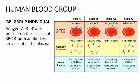Next, AB group individuals. In AB group individuals, both antigens A and B are present on the surface of RBC — both blue color balls and purple color arrows are found. However, both antibodies are absent in the plasma. So in AB group individuals, only antigens are present and antibodies are absent.